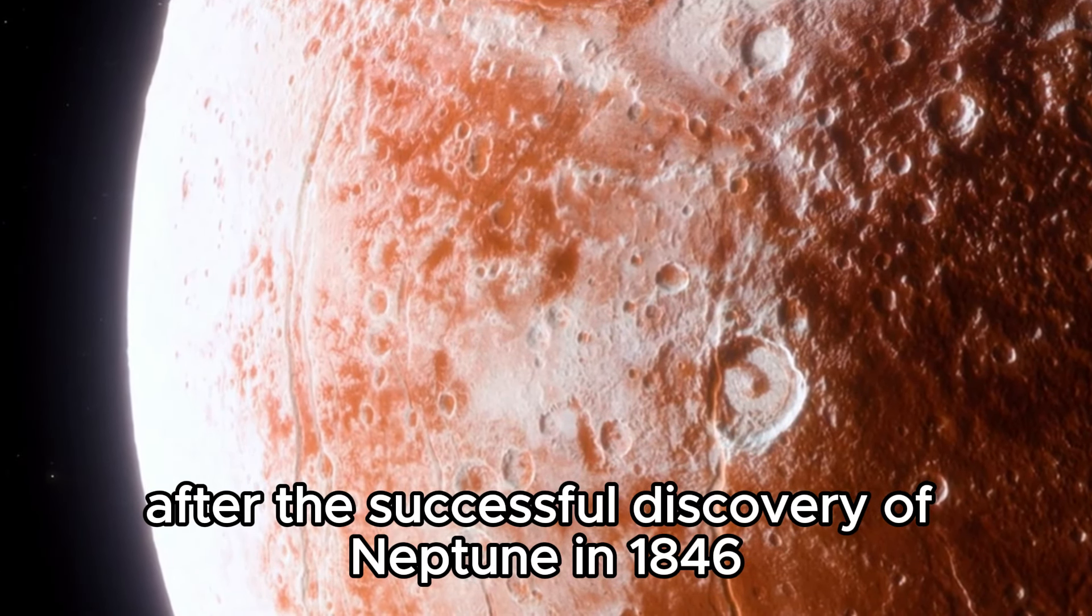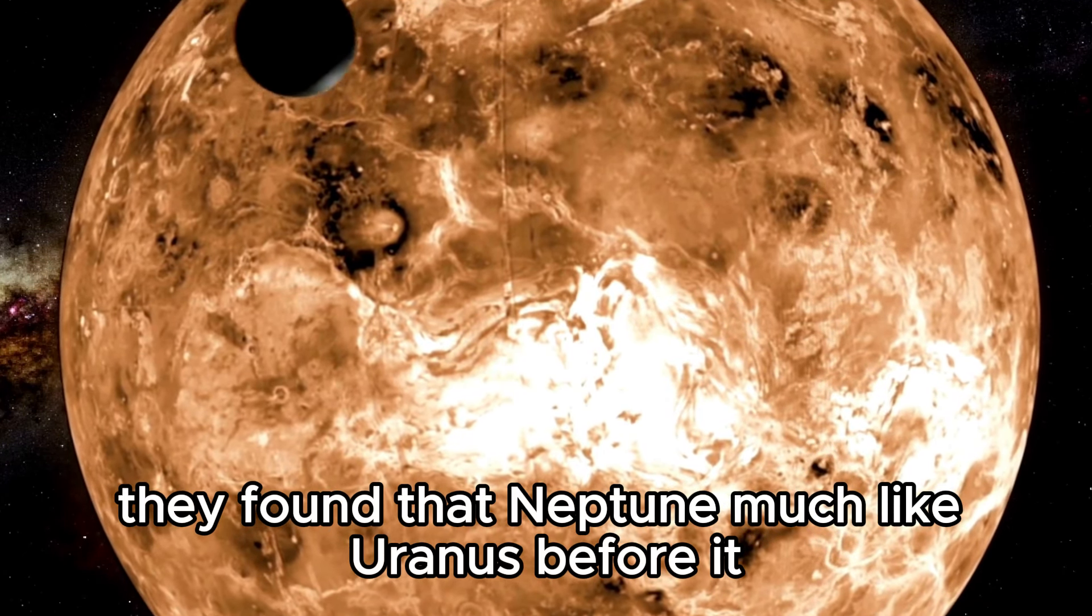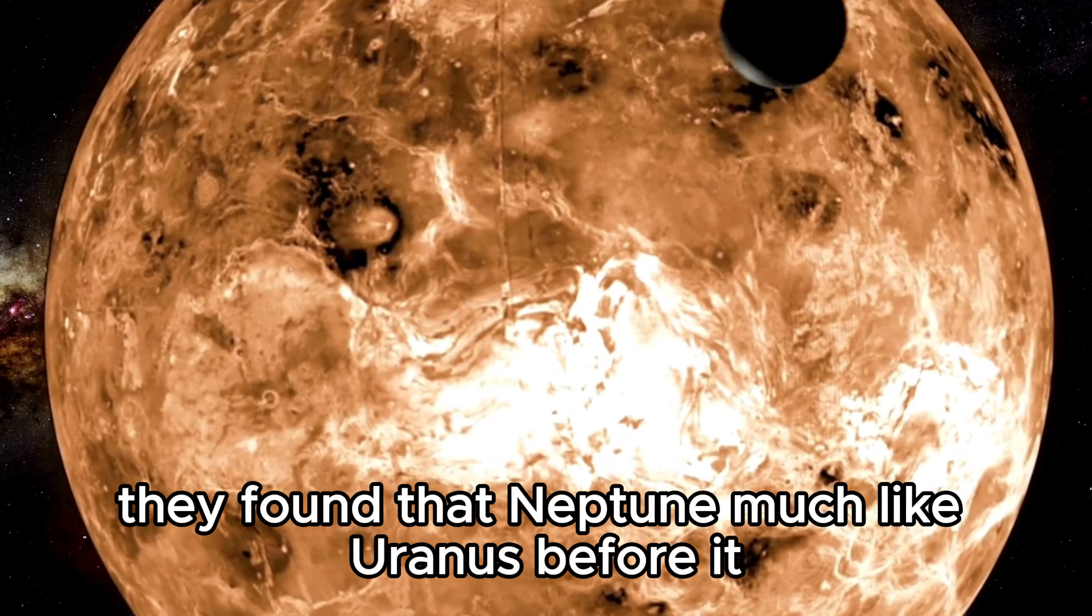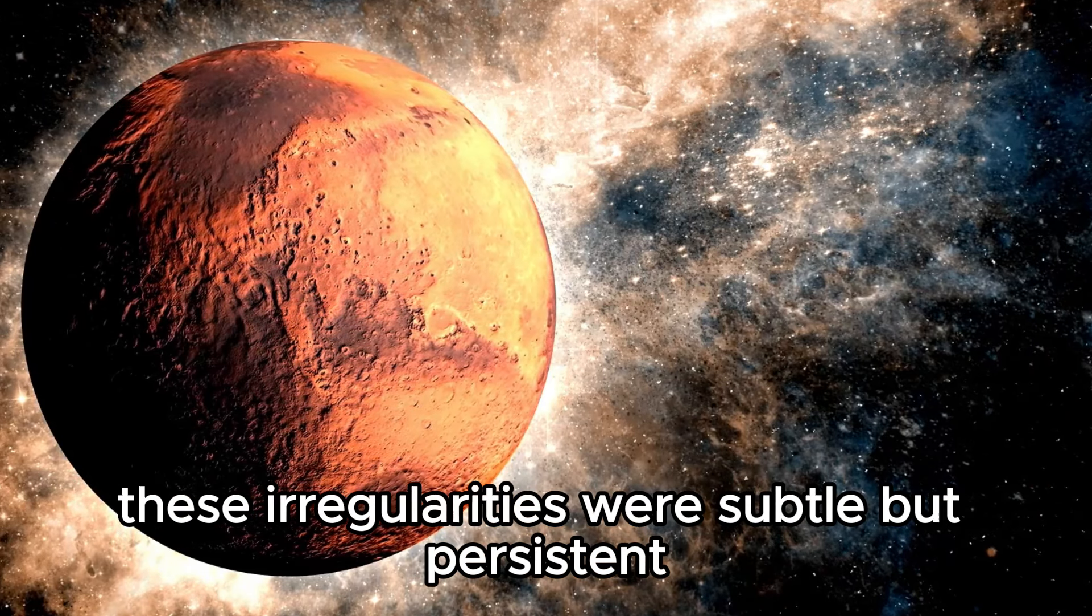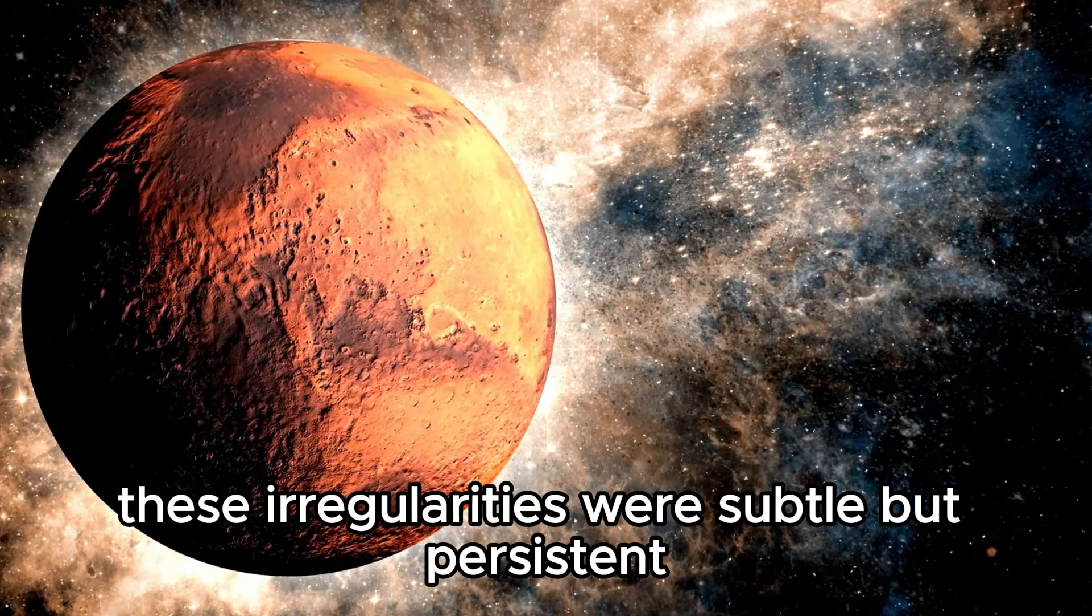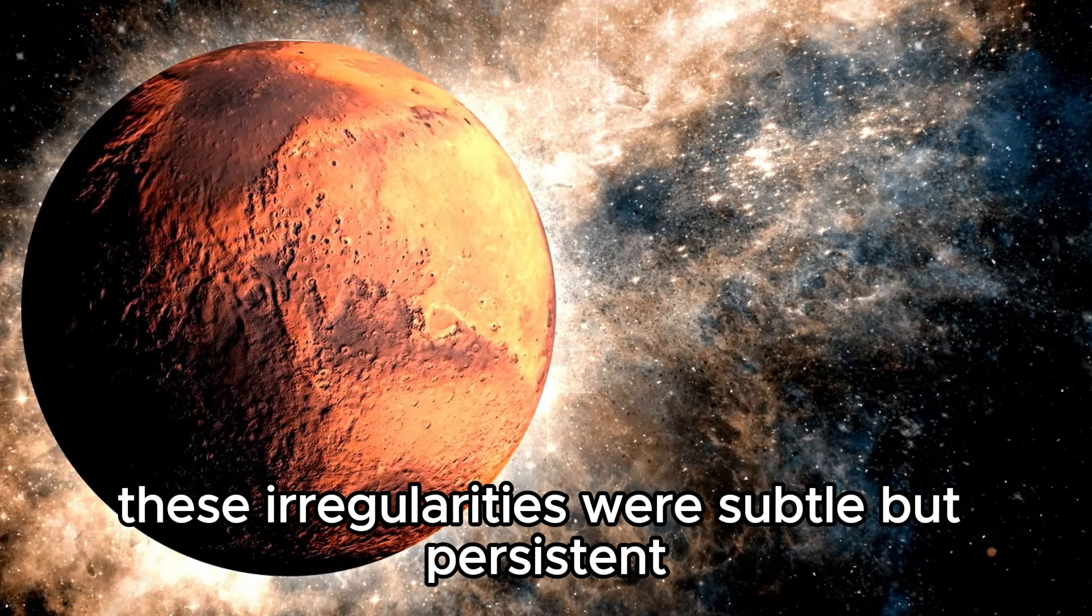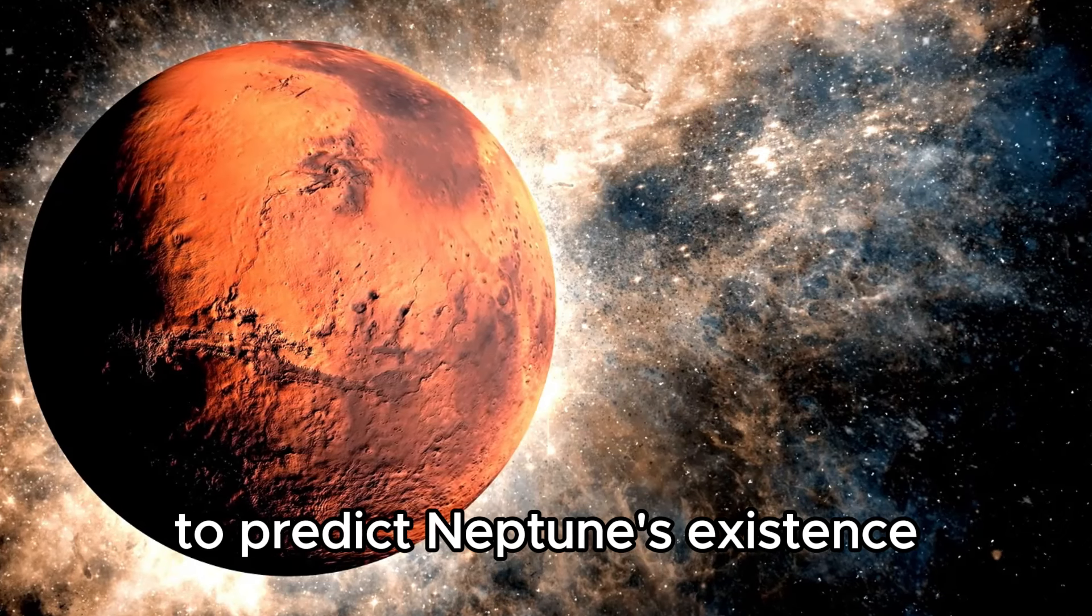After the successful discovery of Neptune in 1846, astronomers thought they had a complete picture of the major planets in our solar system. However, when they tracked Neptune's orbit, they found that Neptune, much like Uranus before it, exhibited slight deviations from its predicted path. These irregularities were subtle but persistent.